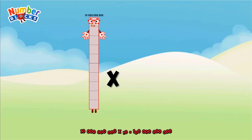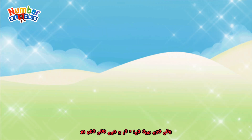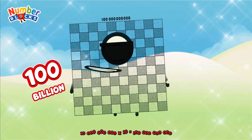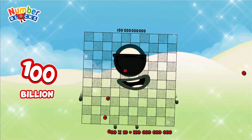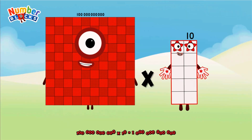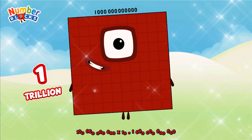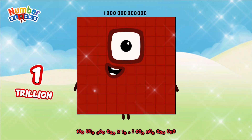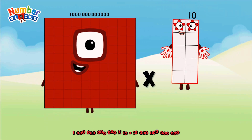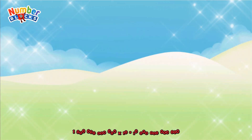Ten billion multiplied by ten equals one hundred billion. One hundred billion multiplied by ten equals one trillion. One trillion multiplied by ten equals ten trillion.